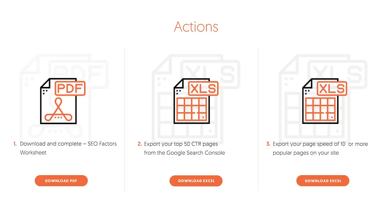Action items before we finish today's lesson: download and complete the SEO Factors Worksheet. You can find these at neilpatel.com/training — whether you're watching on YouTube, LinkedIn, or Facebook. I want you to export your top 50 CTR pages from Google Search Console, and we'll show you how to do this in the Excel sheet. I also want you to export the page speed of 10 or more of your popular pages on your website, and we'll work through the worksheet on how you can improve all of them. Thank you for watching. I look forward to teaching you how to audit your website next when it comes to SEO.